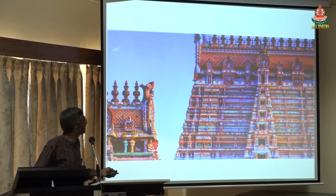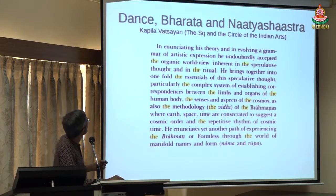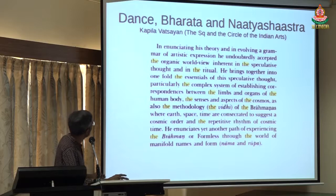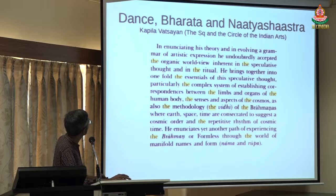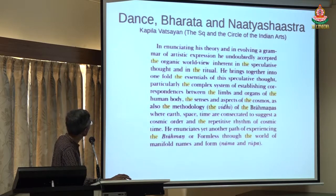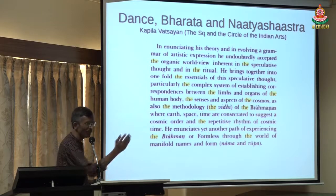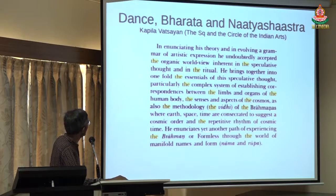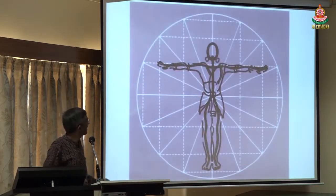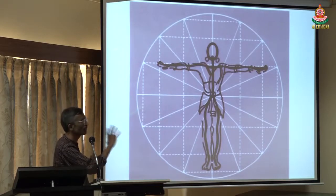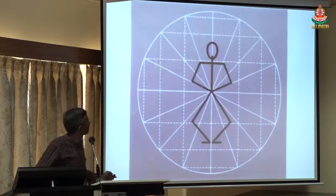This is the Srirangam Temple. You can see recursion in many areas — for example, in dance forms. Bharata in his Natyashastra talks about bringing together, in one fold, the sense of speculative thought — particularly the complex system of establishing correspondence between the limbs and organs of the human body, the senses, and aspects of the cosmos, as well as the methodology of the Brahmanas, with the earth, space, and time consecrated to suggest a cosmic code. As Professor Madhukana also talked about, the dance form is constructed in some space and time.